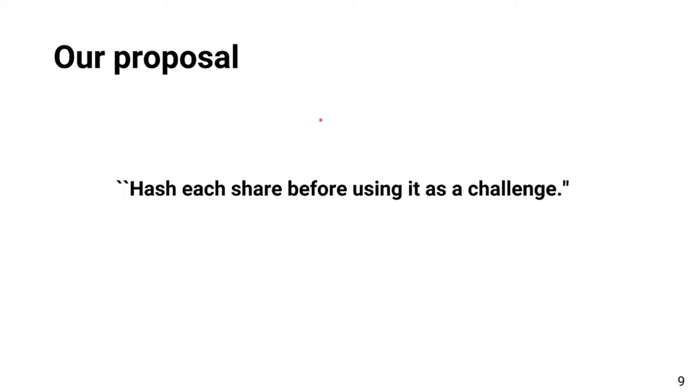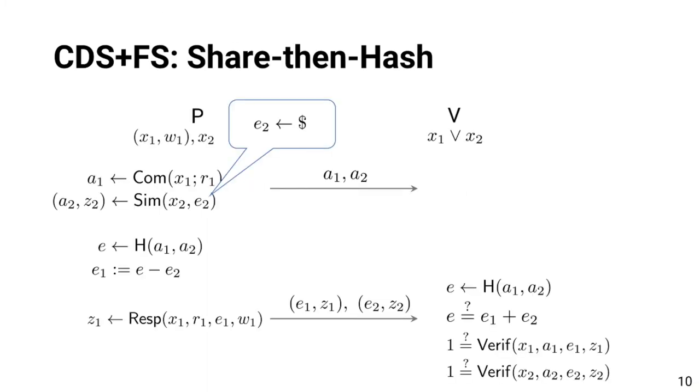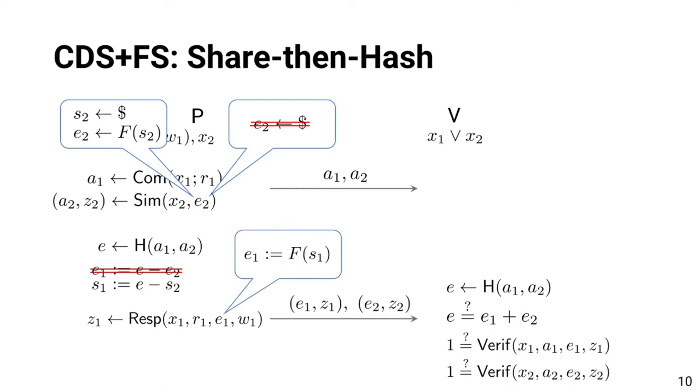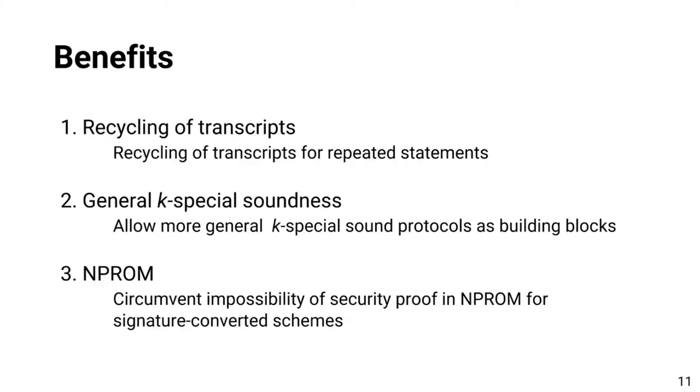Our proposal can be summarized in one sentence: Hash each share before using it as a challenge. Namely, instead of choosing a challenge randomly, we generate it by hashing a random string. The additive sharing is done with respect to the input to hash function f, and the shares are sent to the verifier. The verifier algorithm is modified accordingly. Hash function f used for this purpose is independent of hash function h for the Fiat-Shamir transform. Now, we explain how such a small modification makes differences. There are three benefits in the modified scheme compared to the original CDS composition.